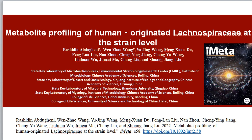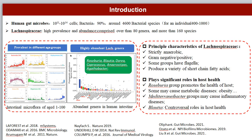There are numerous microbes, mainly bacteria, residing in the human intestine. Lachnospiraceae, being one of the most abundant and prevalent bacterial families, consists of over 80 genera, including more than 160 species.